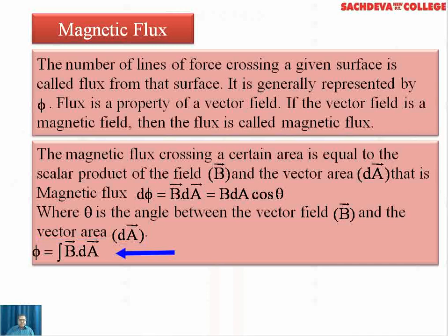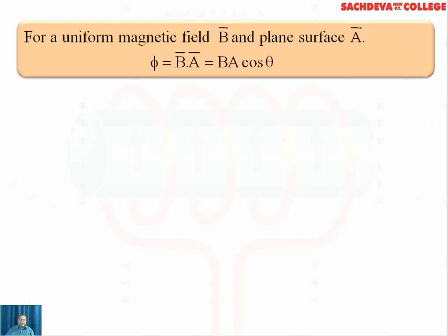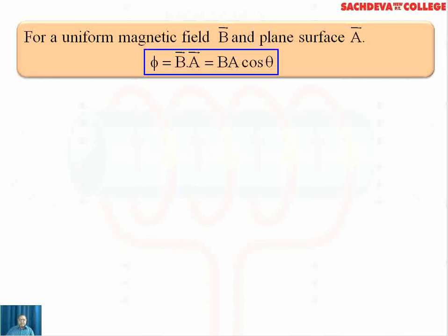So phi is the integration of B·dA. If we integrate dA, B is taken out of the sign of integration as a constant, and integration of dA equals A. So phi can be written as B times A. For a uniform magnetic field B and a plane surface, phi = BA, and it can be written as BA cosθ.